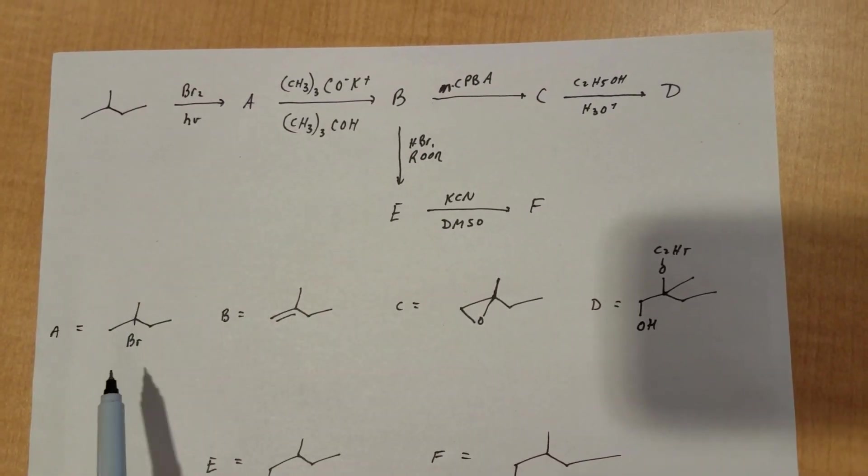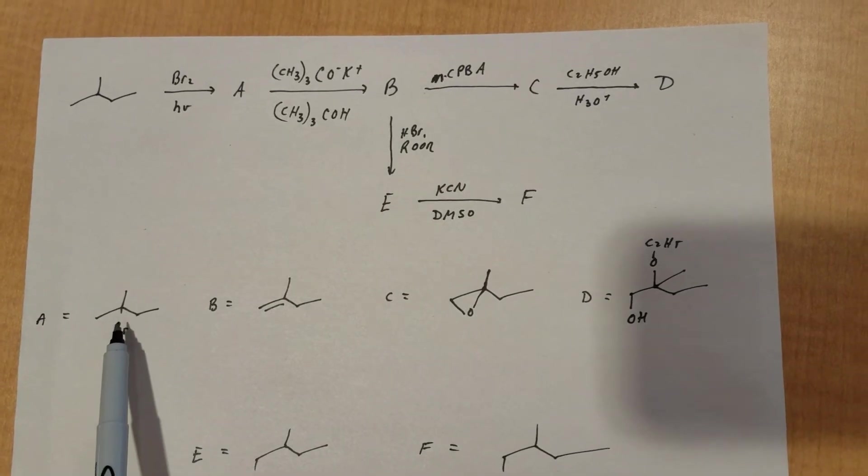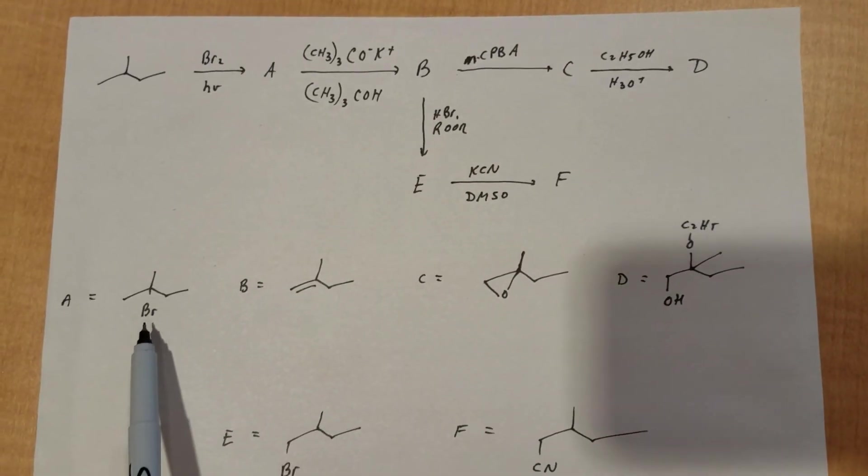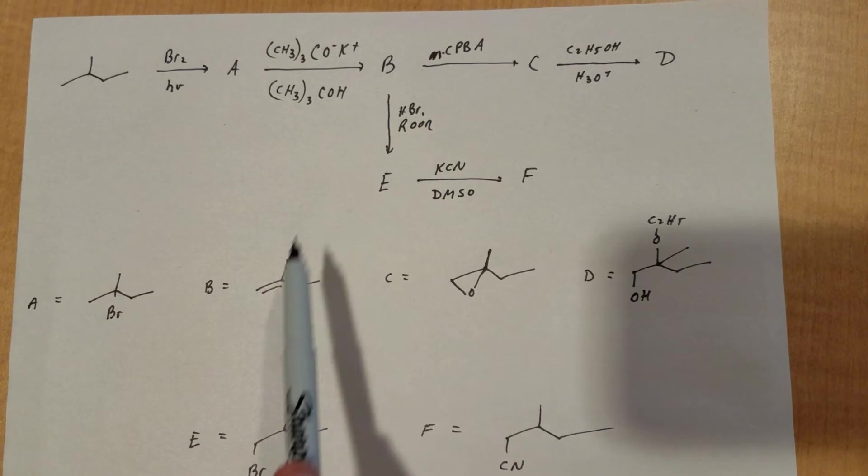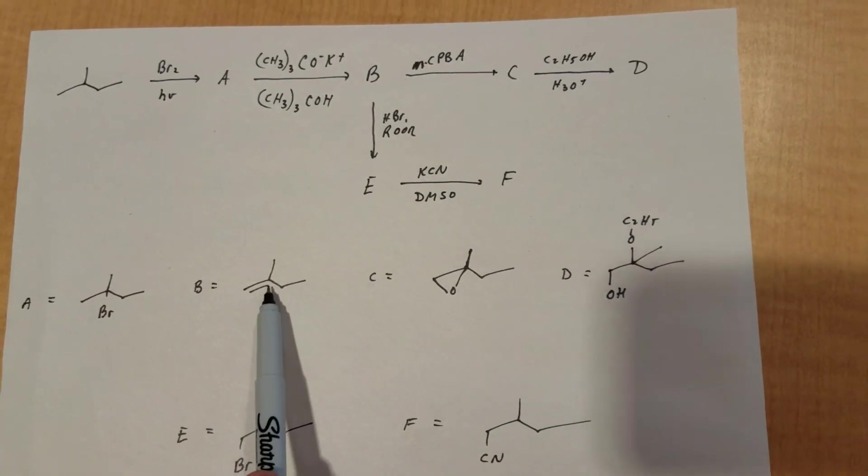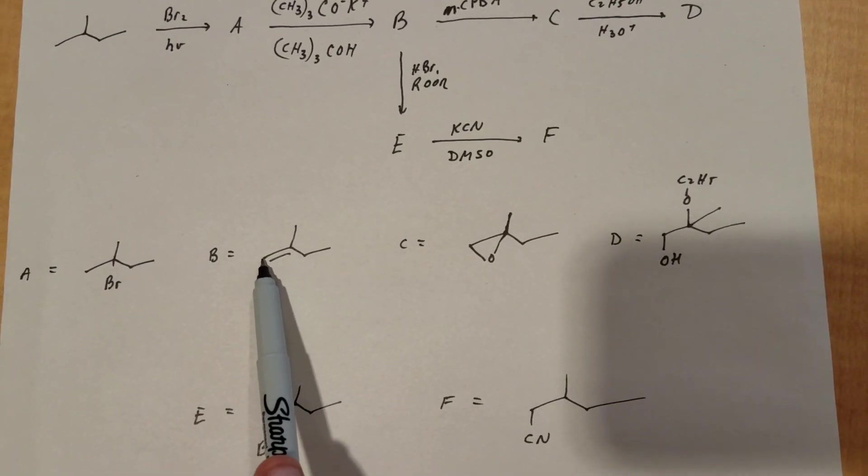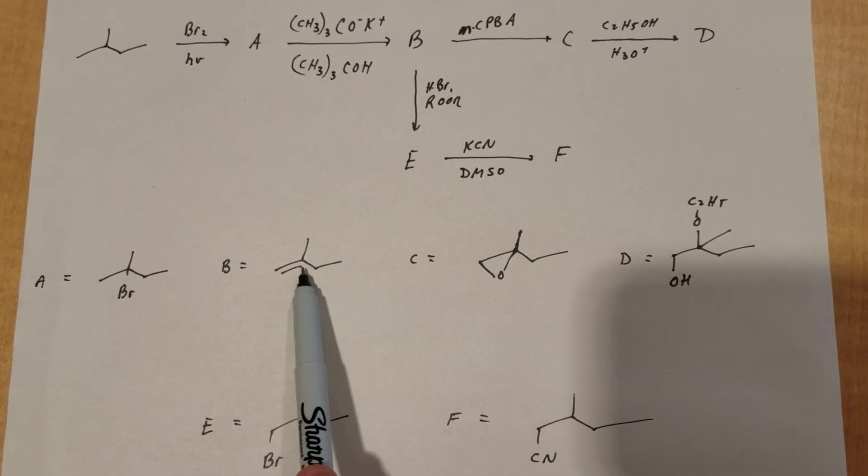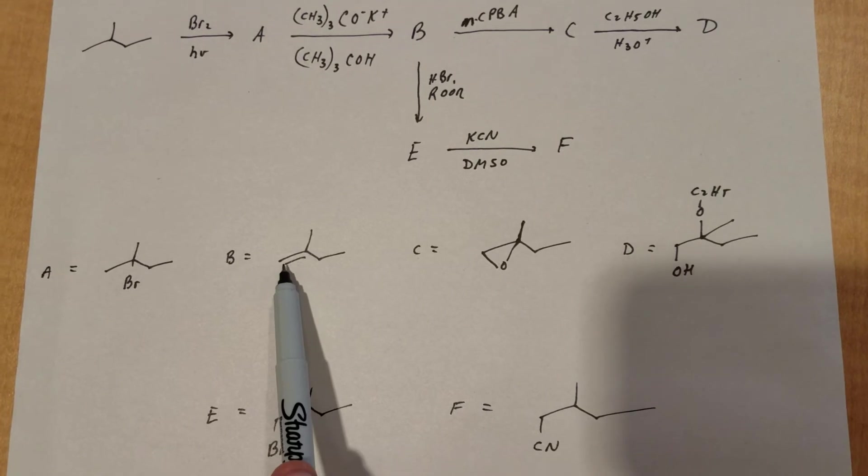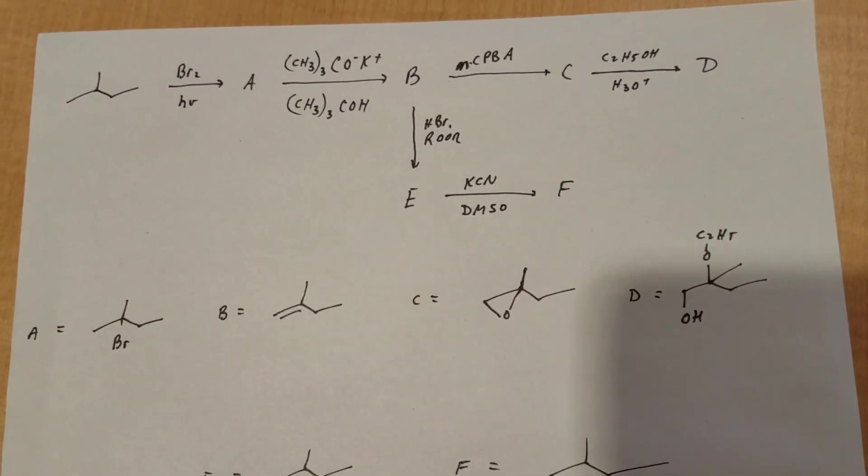First step is easy enough. Bromine in light replaces the hydrogen with the bromine at the tertiary position. From A to B, you do a Hofmann elimination. In a Hofmann elimination, you remove off the halogen and the easiest accessible hydrogen, and you form the less substituted alkene, and that's B. Then we're going to do an oxidation.